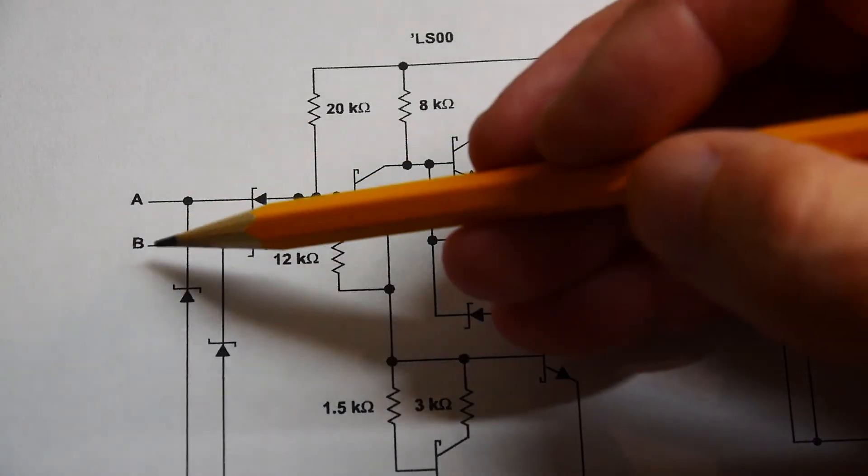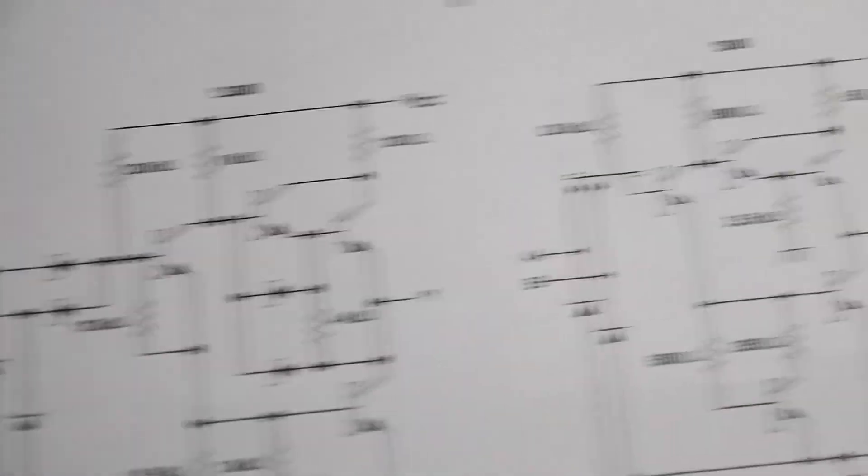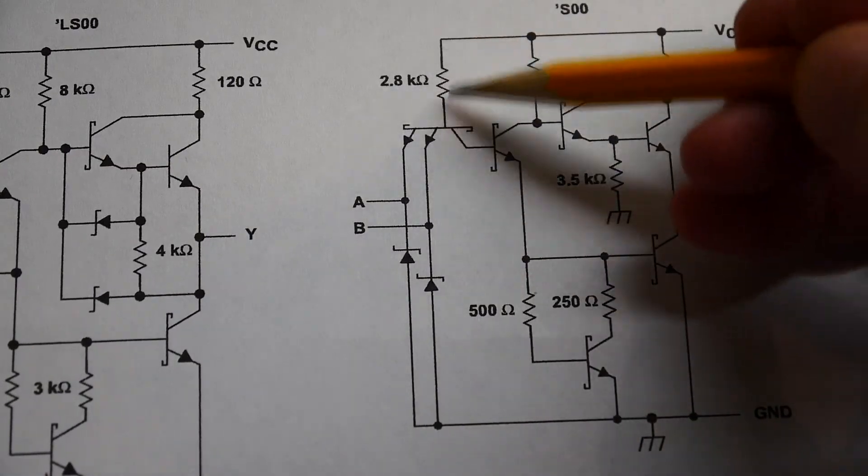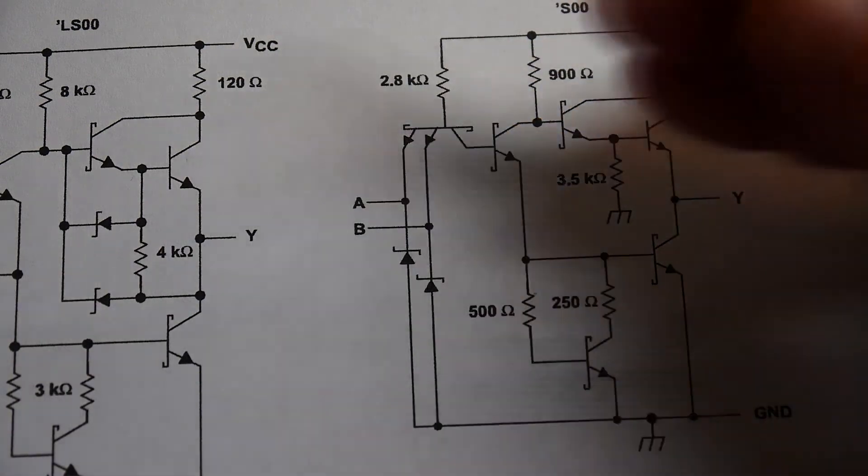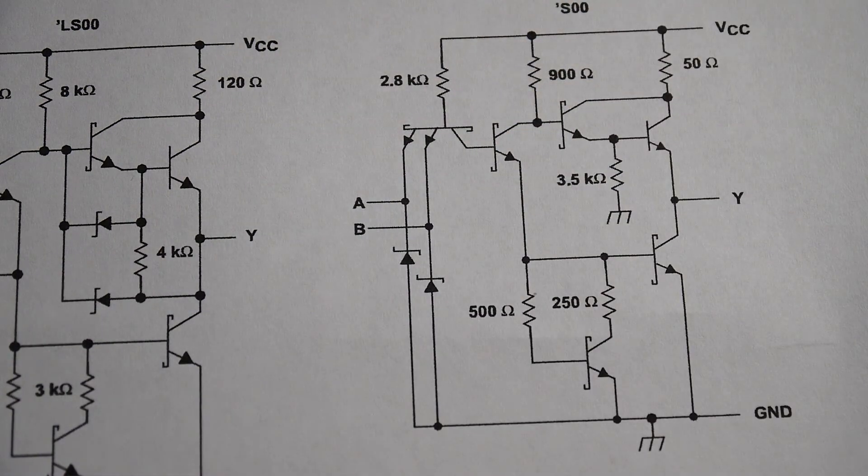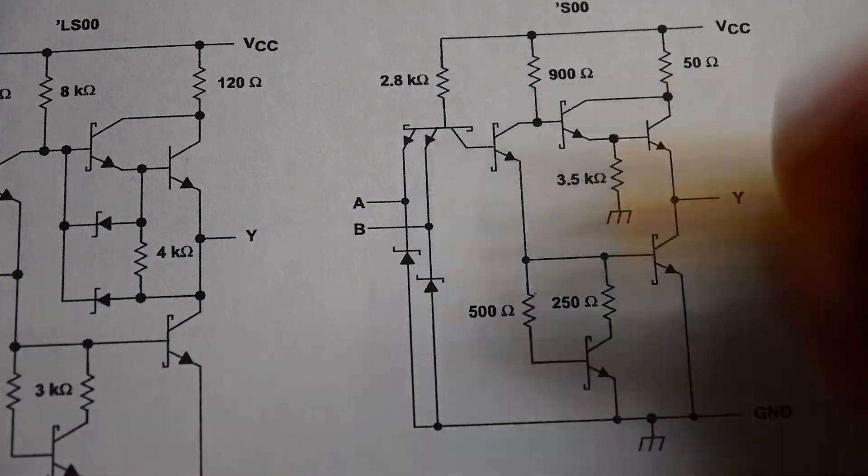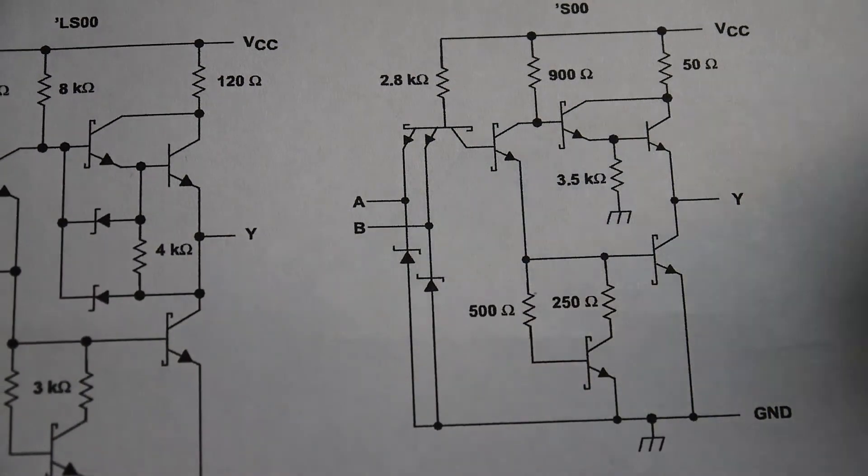But 20k is the impedance here. So these lines still can be floated and they'll be pulled up with a 20k resistor. Here in the S version, we see that it's being pulled up with a 2.8k, which is more than the other two. So again, higher currents, faster. Well, that's what the S is all about. It's basically the same circuit, just higher currents makes it go faster. Draws more current, gets hotter, but it goes faster.